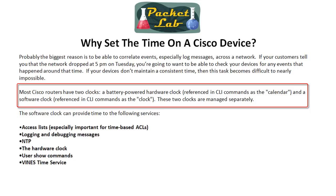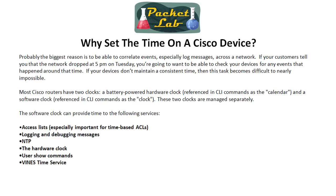There are two clocks on most Cisco routers. A battery-powered clock — that's your internal clock, which the CLI refers to as the calendar. That's analogous to the little battery on your PC motherboard that keeps time when the device doesn't have power. It's actually a rechargeable chip on Cisco routers. And then there's the software clock, which is what we're going to be looking at, and that's just referred to as the clock.